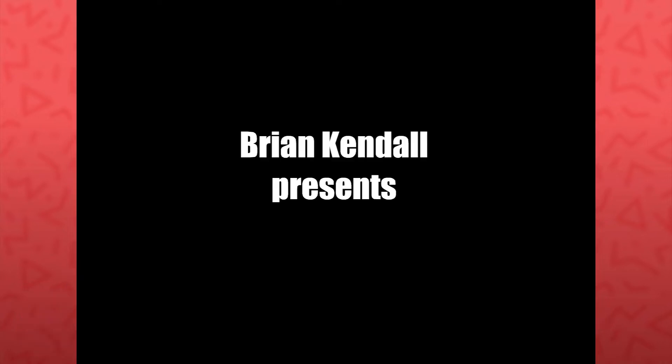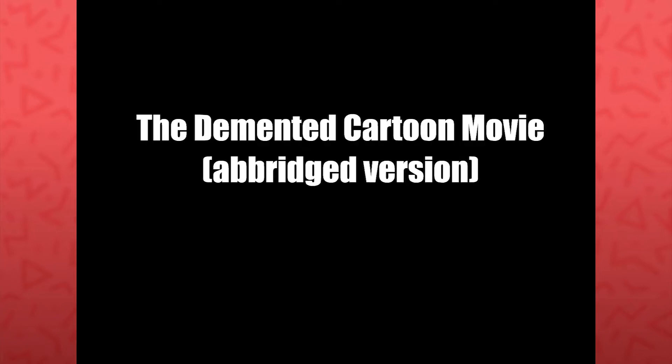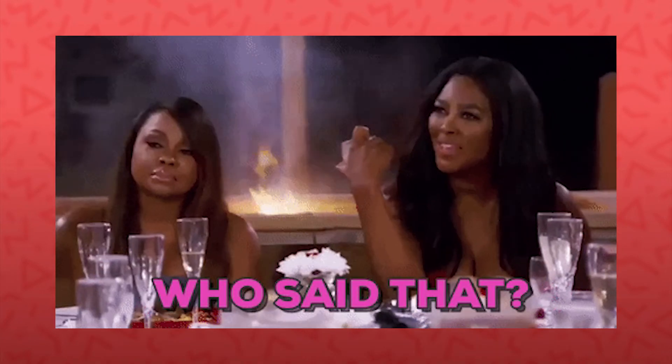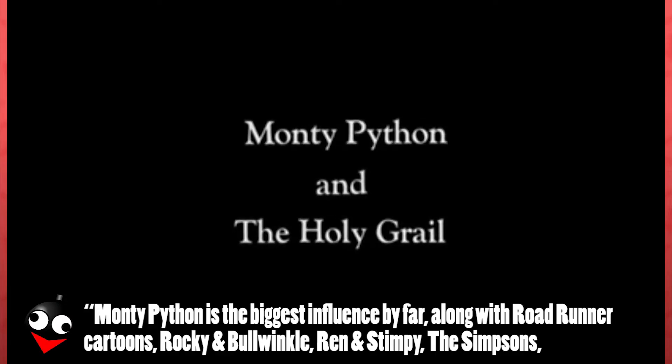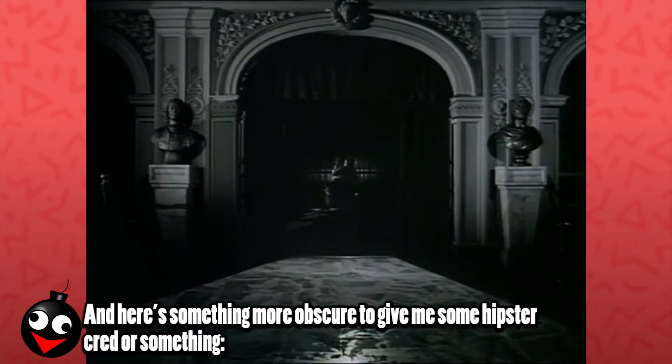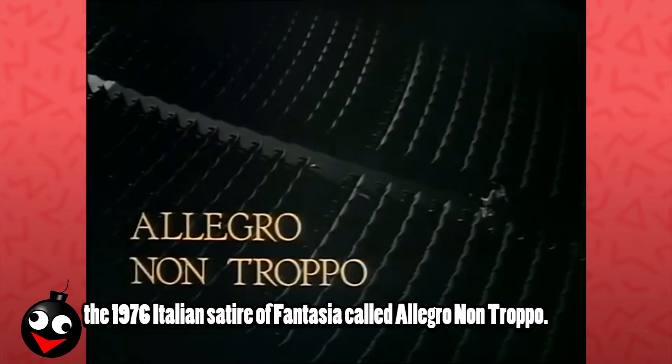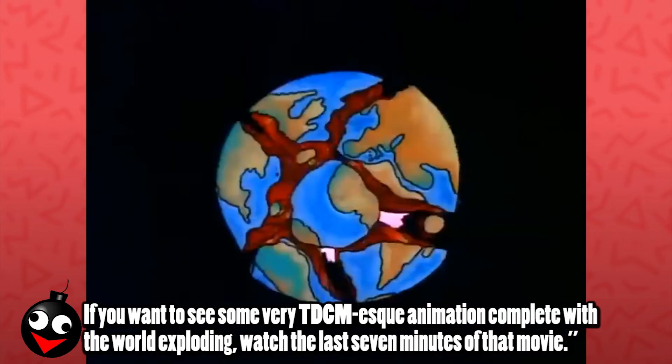From the fake movie credits intro, to several of the jokes throughout, there are some fairly obvious Monty Python influences. Which becomes somewhat filtered and distilled into exactly what you would expect a teenager's version of Monty Python to be. While I understand that some out there may find it insufferable, juvenile, or stupid. Trying to guess at adjectives here, I don't feel that way. At least the movie knows what it is, and never tried to be anything different. Asking Brian directly about his comedic influences, he shared, Monty Python is the biggest influence by far. Along with Roadrunner cartoons, Rocky and Bullwinkle, Ren and Stimpy, The Simpsons, and probably a ton of stuff I'm forgetting. And here's something more obscure to give me some hipster cred or something. The 1976 Italian satire of Fantasia called Allegro Non-Troppo. If you want to see some very demented cartoon movie-esque animation complete with the world exploding, watch the last seven minutes of that movie.